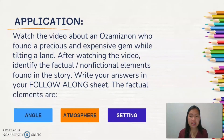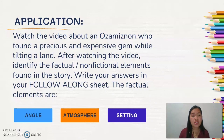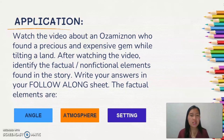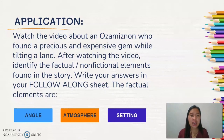I hope you understand the entire lesson. If you have misconceptions or don't understand some points, you can replay this video and go back to that part. When you are ready for an application, we will watch a video about an Ozamiznon who found a precious and expensive gem while tilling a land. After watching the video, identify the factual or non-fictional elements found in the story and write your answers in your follow-along sheet. The factual elements to focus on are angle, atmosphere, and setting. Are you now ready? Please watch this video now.